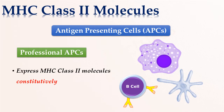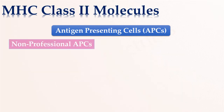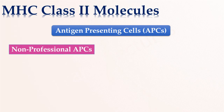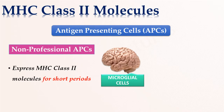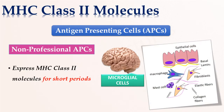The second category is known as non-professional antigen-presenting cells. They express class 2 molecules only for short periods under certain circumstances. They include phagocytes such as microglia in the brain and fibroblasts. Thus, the occurrence of class 2 MHC molecules is much more restricted.